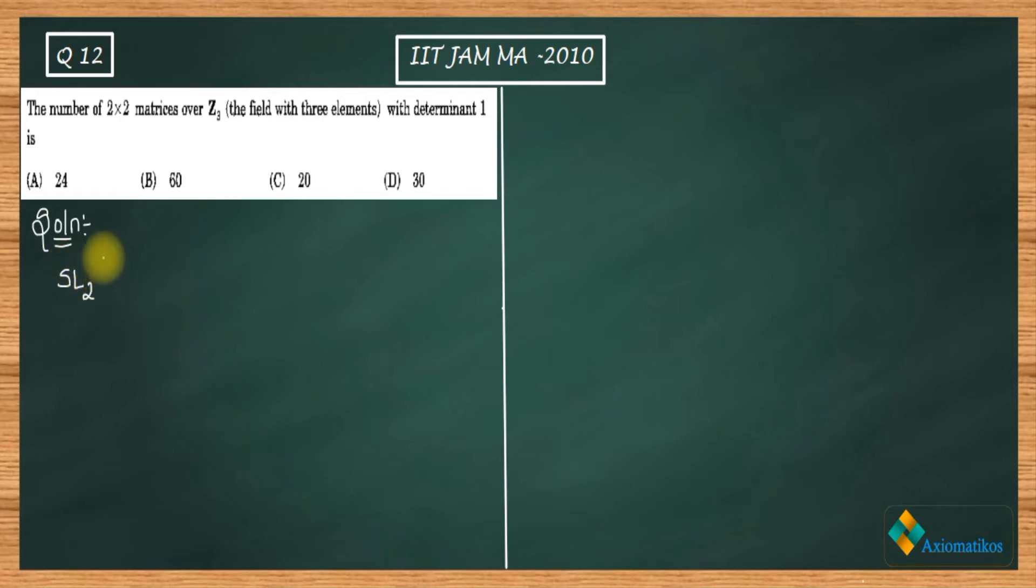SL₂(F₃). You can write Z₃ also here. This is a special linear group, and it is defined like this: it will consist of 2×2 matrices such that aᵢⱼ belongs to F₃ and determinant of A is one. This is the definition. I hope you already know this definition.